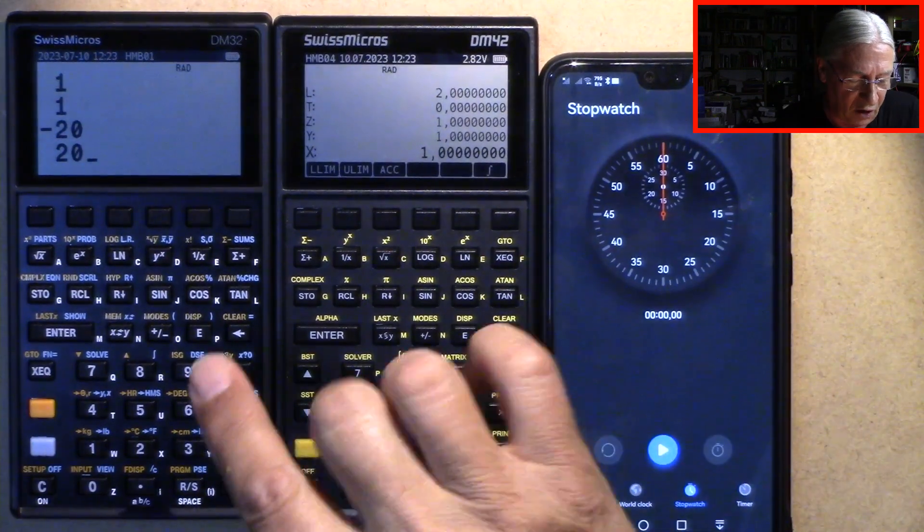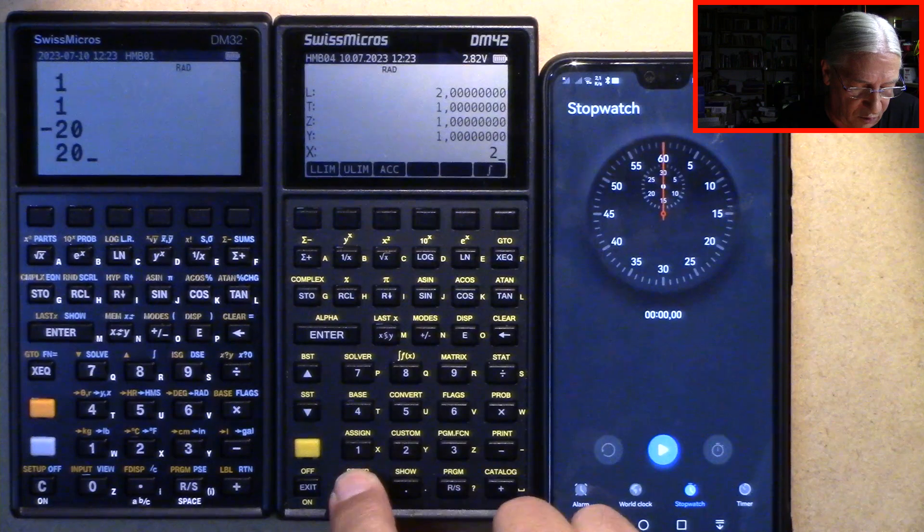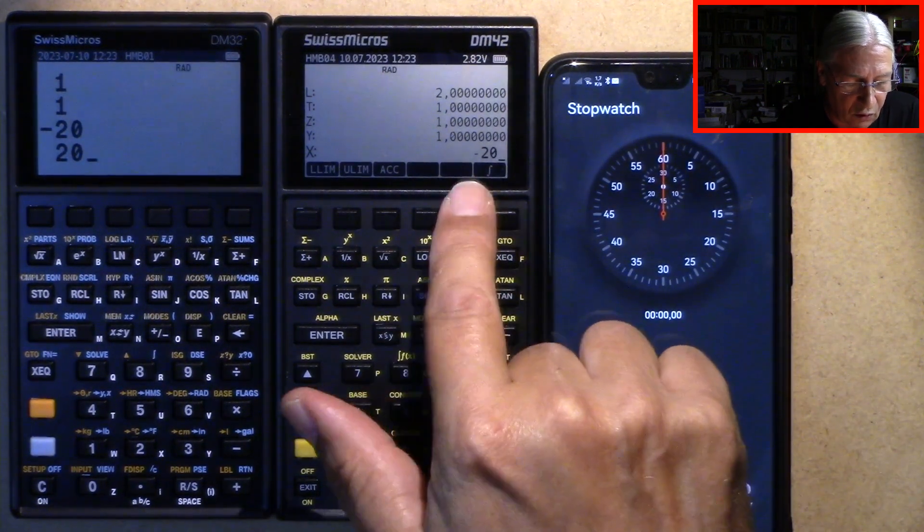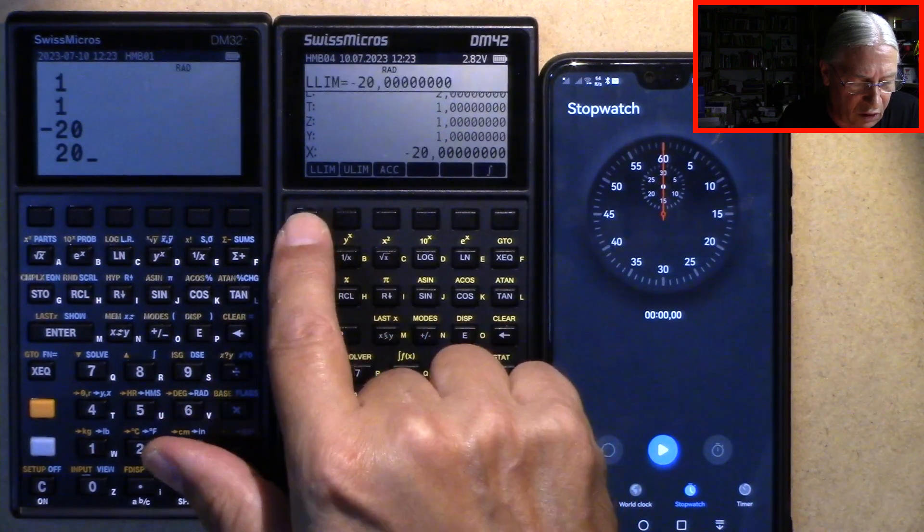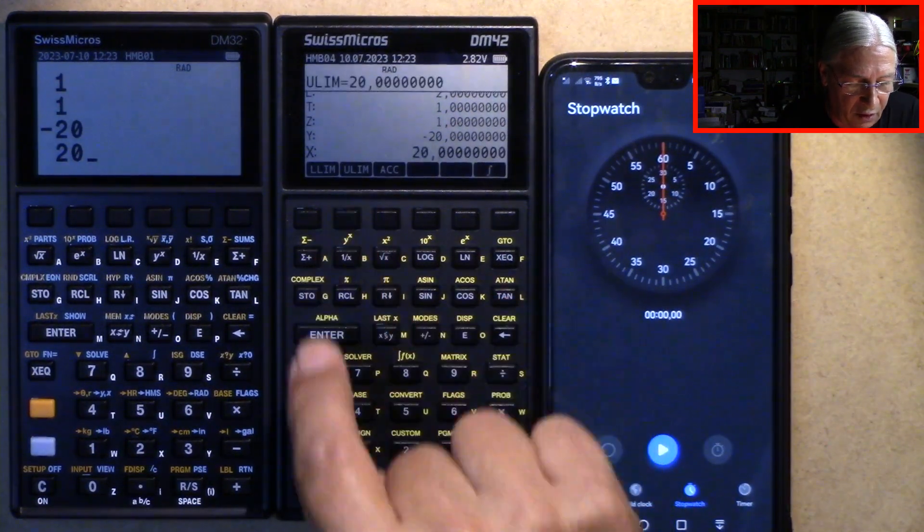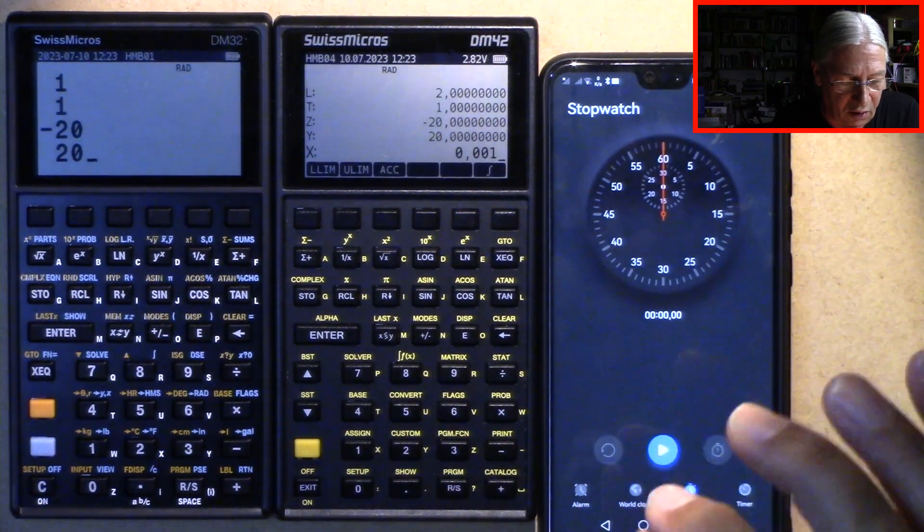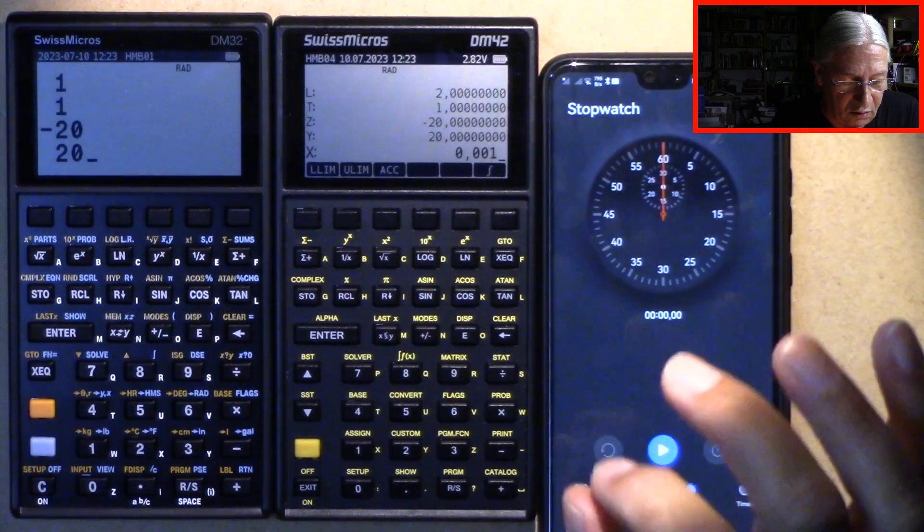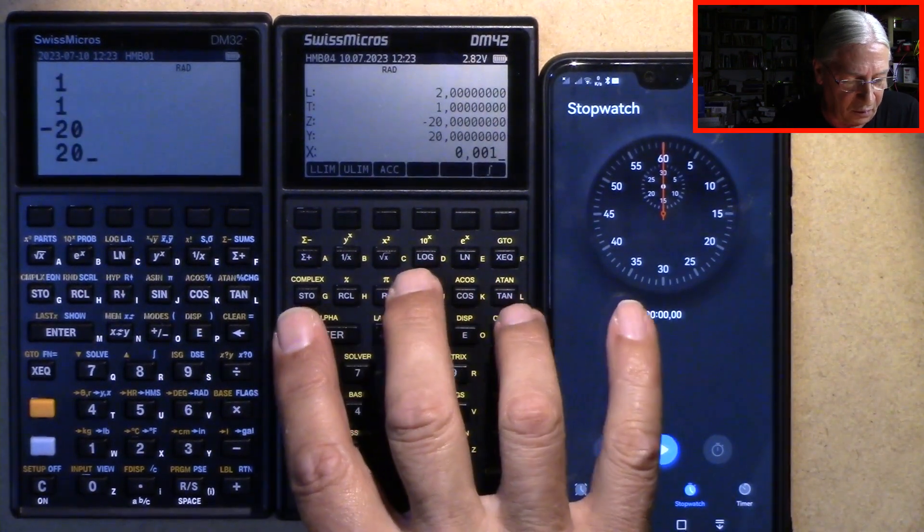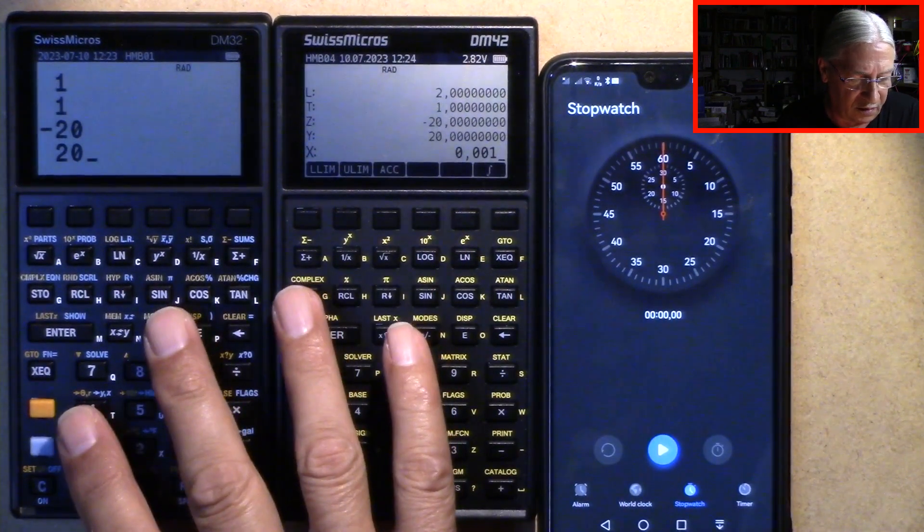Okay, so we do the same here with the lower and upper limits. So minus 20 lower limit, plus 20 upper limit, and with an accuracy of 0.001 we get about the same precision on both calculators.